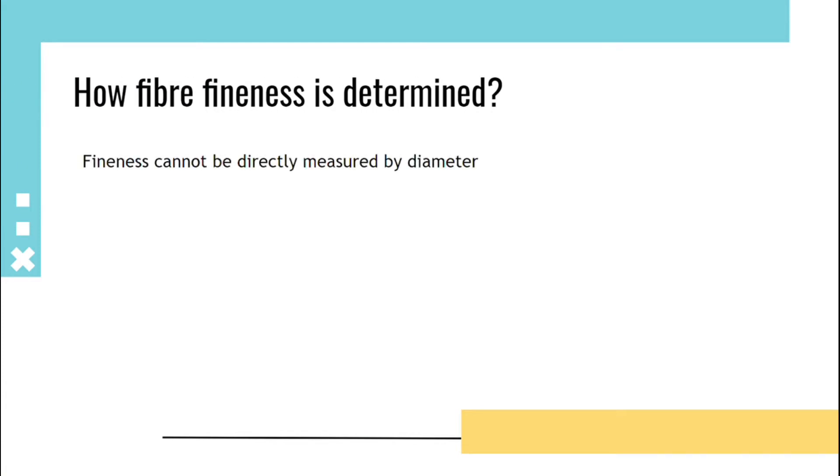Hello guys, welcome to TIPS, our platform for textile problems and solutions. Now we are going to learn about fiber fineness. How fiber fineness is determined? Fineness cannot be directly measured by diameter. Reasons are: cross-section of most of the fibers are non-circular,